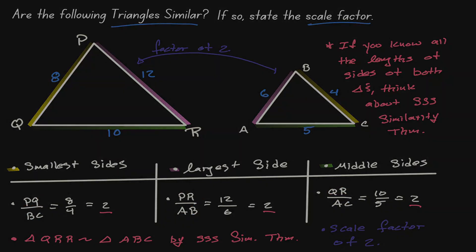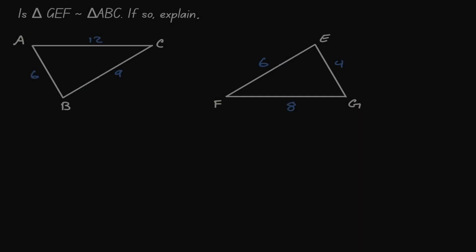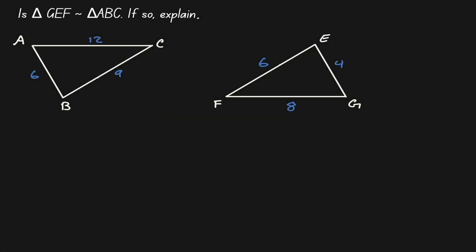Let's take a look at another example. In this example we want to see if we have two similar triangles and we want to explain our conclusion. When looking at the givens, notice that we have the measurement for all sides of both triangles — then this is a good indicator that we want to think about side-side-side similarity theorem.